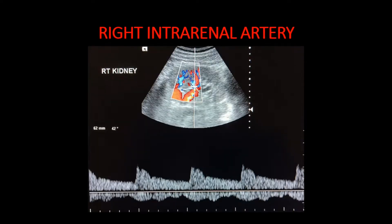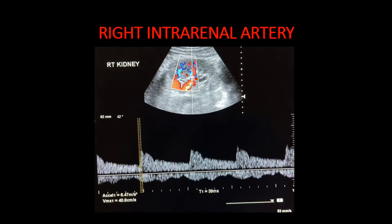This is the spectral Doppler of the right intraparenchymal artery. We can see that the waveform is of low-resistance type with a good amount of diastolic flow. The acceleration time in these arteries is about 39 ms, indicating good acceleration.